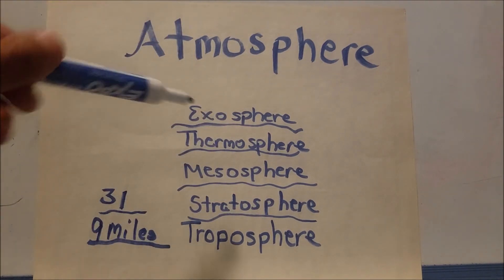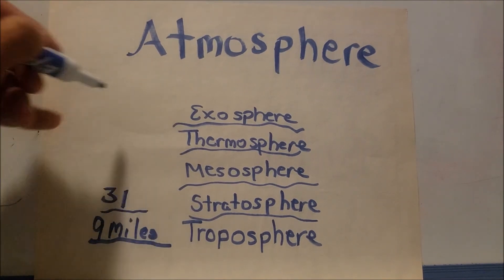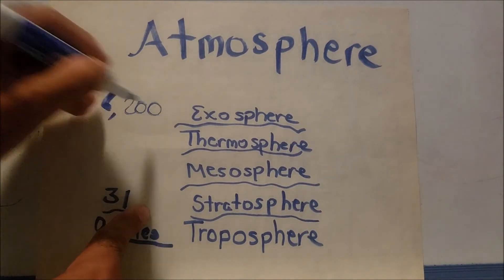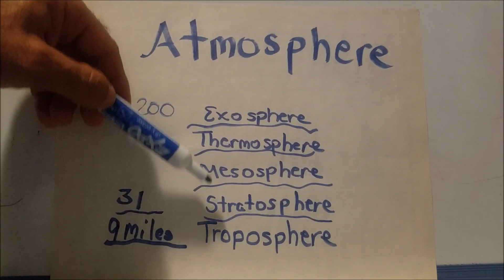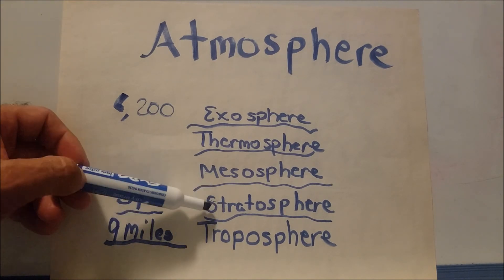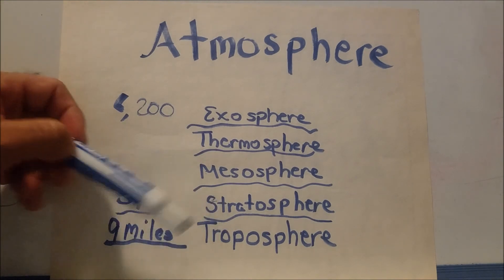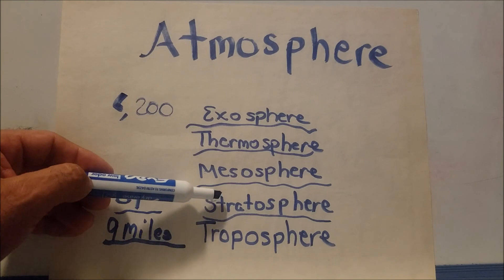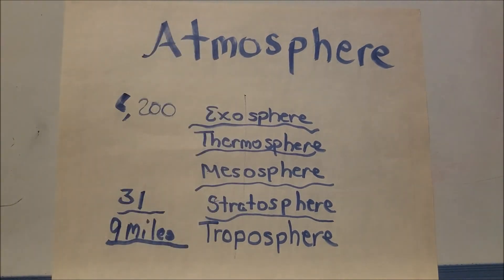The exosphere can go up about 6200 miles. As you go up, there's less and less oxygen and the air gets thinner. No commercial planes can fly above the stratosphere — they need oxygen for their engines. That's why rockets are used to get into outer space, but we'll talk about that in another video.